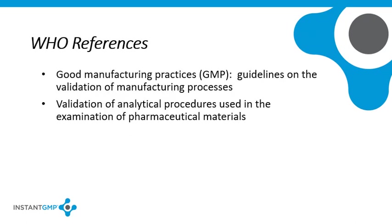The main reference text that the WHO has produced relating to validation is published as Annex 6 of the 34th Report of the WHO Expert Committee of Specifications for Pharmaceutical Preparations, published in 1996. The Annex is titled Good Manufacturing Practices Guidelines on the Validation of Manufacturing Processes. This document covers the subject in detail. It provides a glossary of terms, discussions of the topic in general, types of validation, the different approaches that can be taken, and recommendations on how to organize a validation program. It also presents an outline for a validation protocol and report.